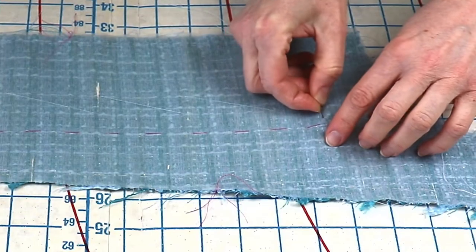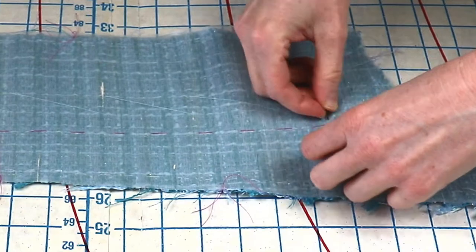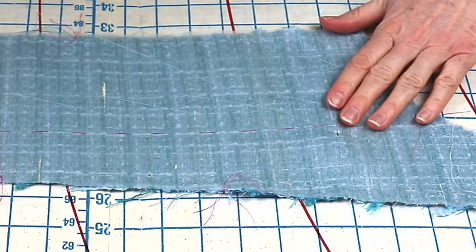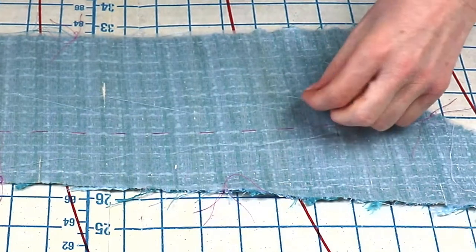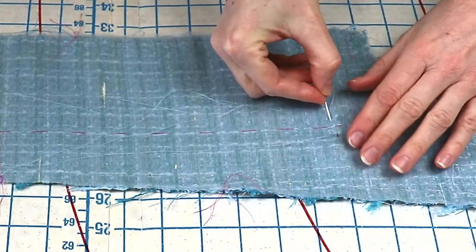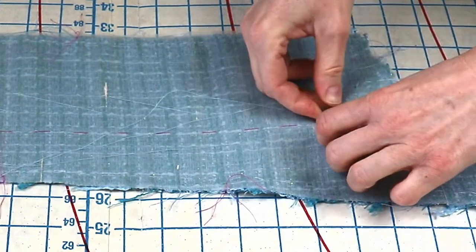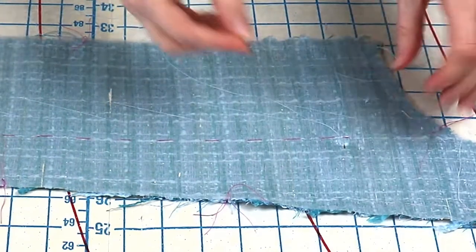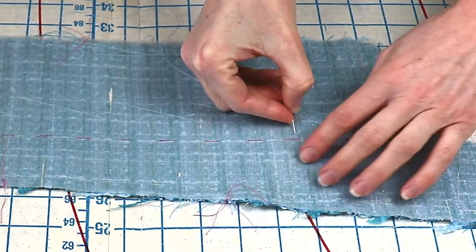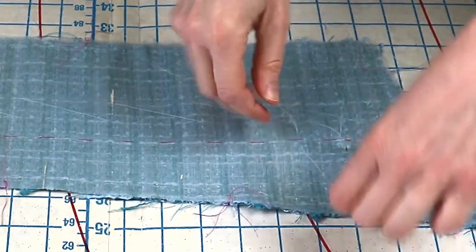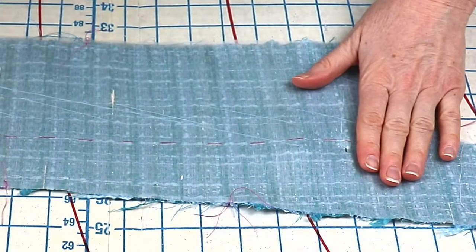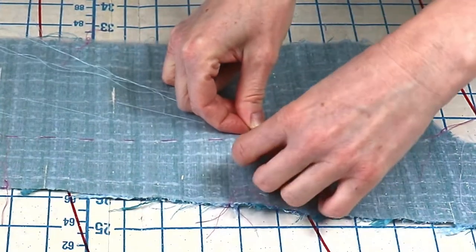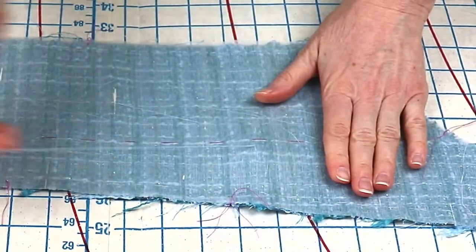Okay, so leave a long thread and make diagonal basting stitches to secure this position. Use the same color or the contrasting color.